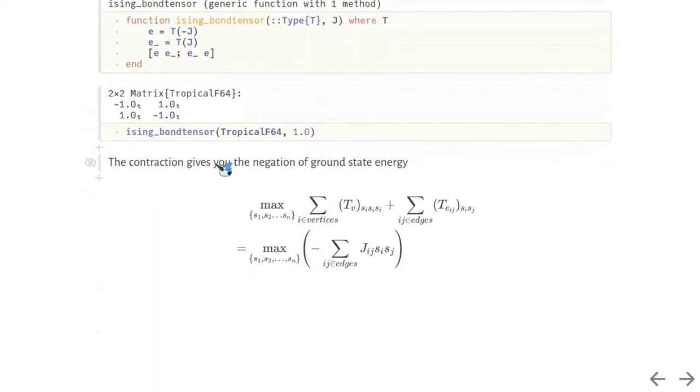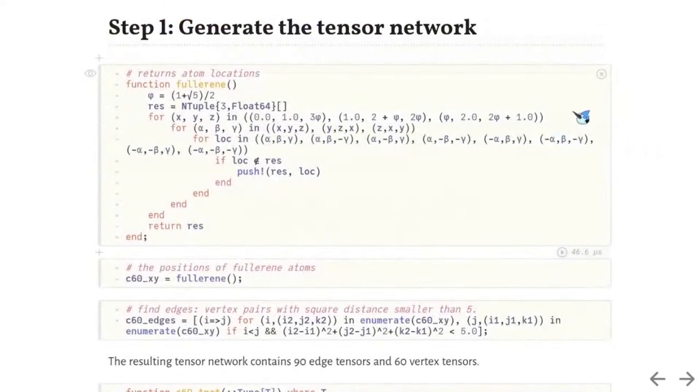The vertex tensor is a delta tensor. It contains only two non-zero elements representing spin values plus and minus one. While the edge tensor is dense, its diagonal elements are negative coupling strength, while its off-diagonal elements are coupling strength.